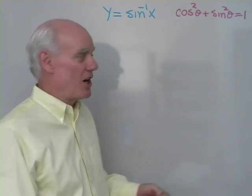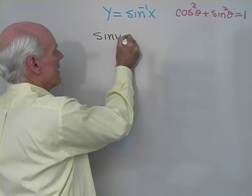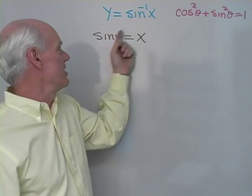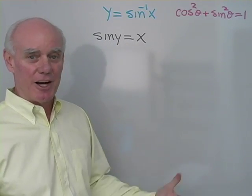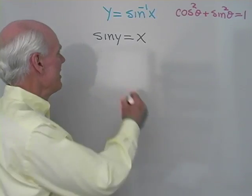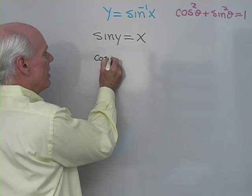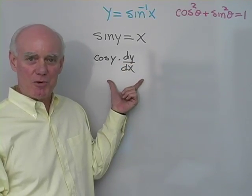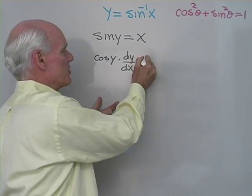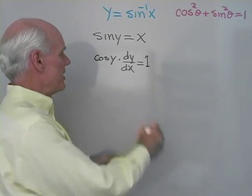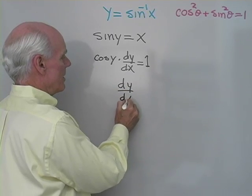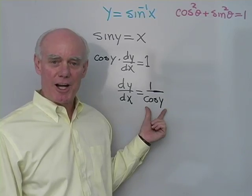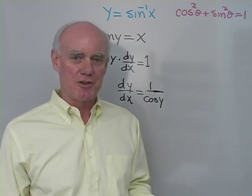Writing inverse sine in terms of sine: sine y equals x — that's the relationship between inverse functions. Differentiating implicitly, the derivative of sine is cosine y times dy dx, and the derivative of x is 1. Solving for dy dx gives 1 over cosine y. Again, this is correct but expressed in terms of y, and we want it in terms of x.